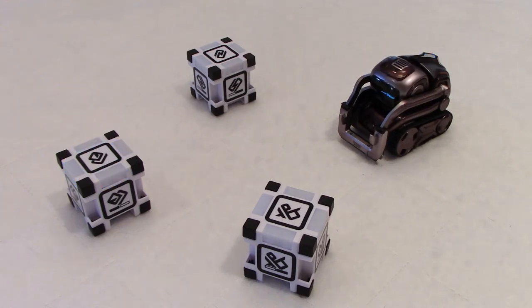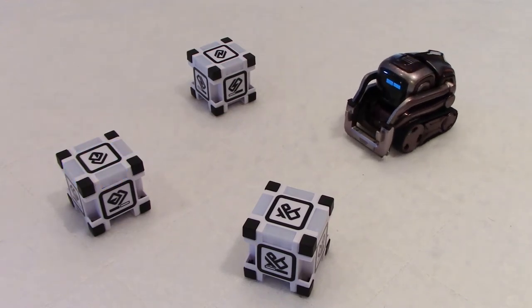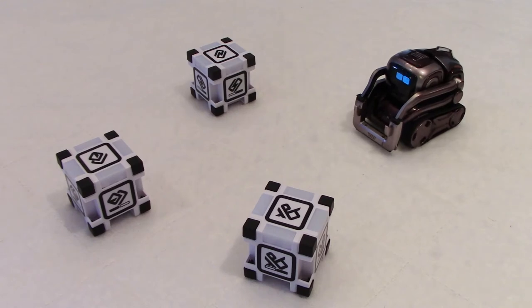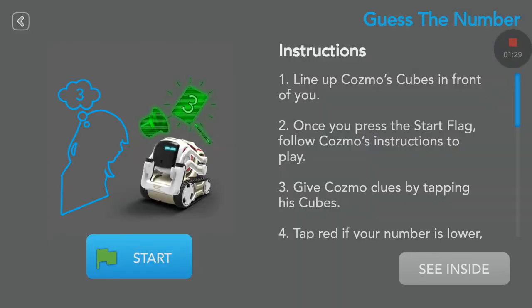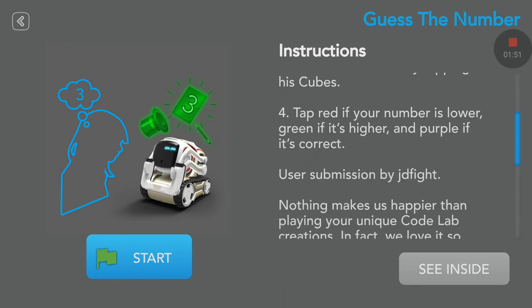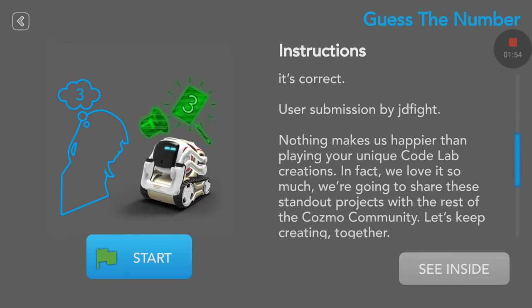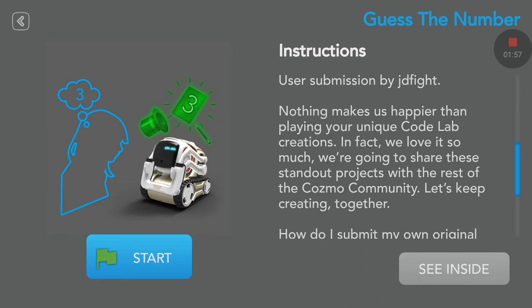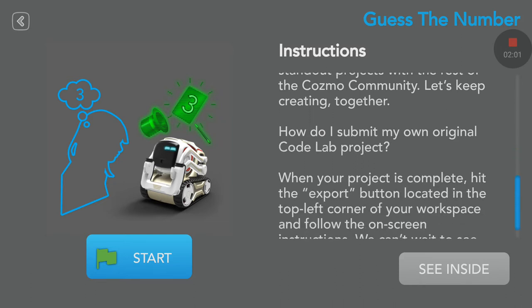Hello buddy, how are you this morning? You're okay — apparently you're an all-mystical robot, so we'll have a look at that. Here it is: Guess the Number. Instructions: line up Cosmo's cube in front of you. Once you press the start flag, follow Cosmo's instructions to play. Give Cosmo clues by tapping his cubes — tap red if your number is lower, green if it's higher, and purple if it's correct. User submission by JD Fight.